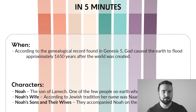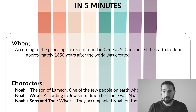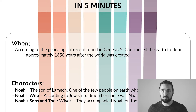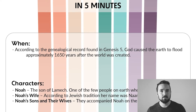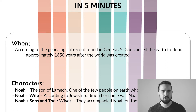When did the events of Genesis chapter 7 take place? We're discussing Noah and the global flood of water that God was going to use to destroy wicked humanity from the face of the earth. And that happened about 1,650 years after the earth was created. We know that from the dates given to us in the genealogy of Genesis chapter 5.